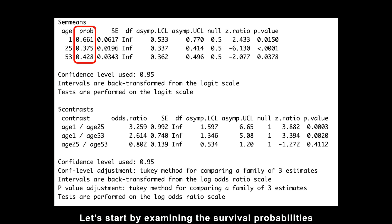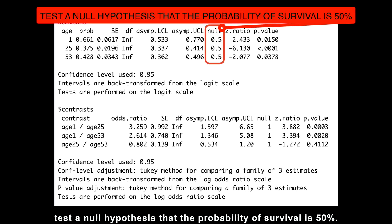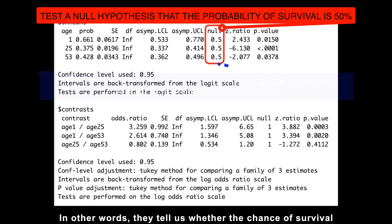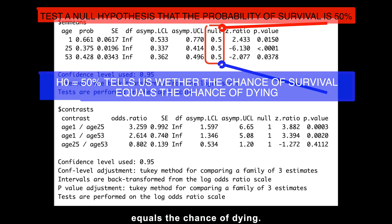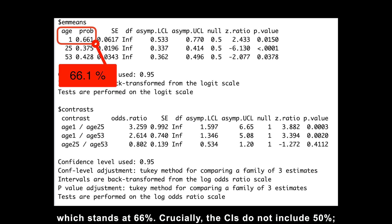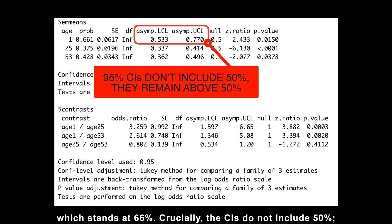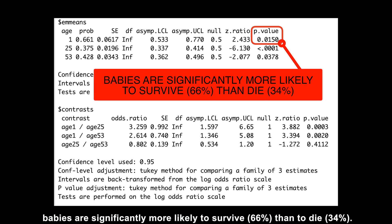Let's start by examining the survival probabilities for different ages and their statistical significance. The p-values associated with these probabilities test a null hypothesis that the probability of survival is 50%. In other words, they tell us whether the chance of survival equals the chance of dying. For instance, consider the probability of survival for babies, which stands at 66%. Crucially, the confidence intervals do not include 50%. They remain above this threshold. This means that babies are significantly more likely to survive than die.